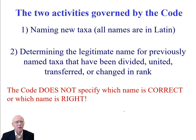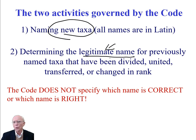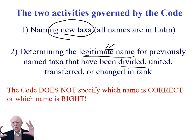Before we get too far into this, let's remember what the International Code tells us. The International Code of Nomenclature governs the naming of new taxa, which we've dealt with in previous videos. It also talks about determining what the legitimate name is — legitimate means which name follows the rules — for taxa that have been divided in some way, or broken up.